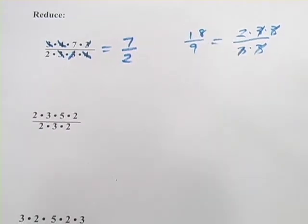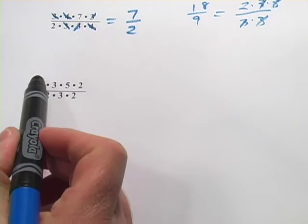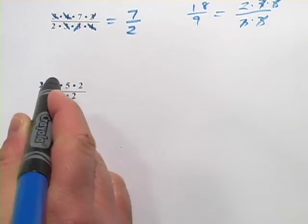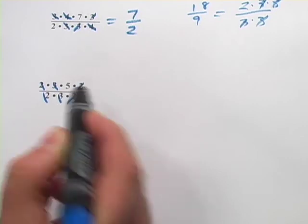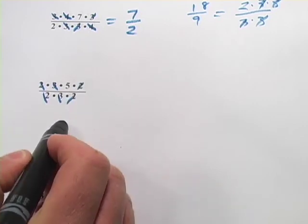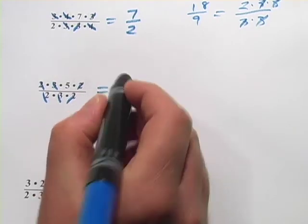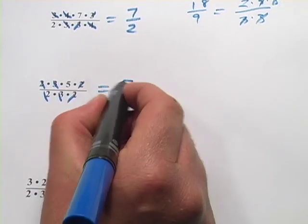Let's try this next one. So all I'm doing is looking for same on top and bottom. So there's a 2 and a 2. There's a 3 and a 3. And there's a 2 and a 2. Now I'm left with nothing on the bottom and just a 5 on the top. So that's 5 over 1 or just 5.